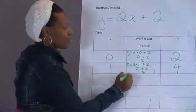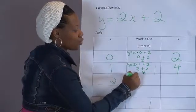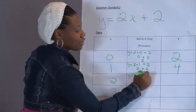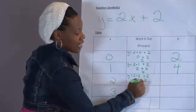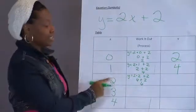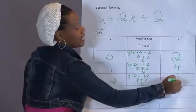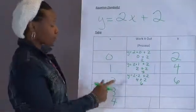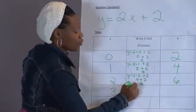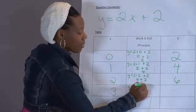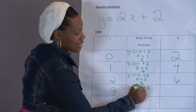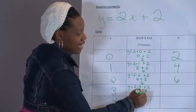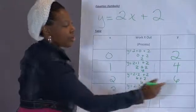Let's do the same for 2. Y equals 2 times 2 plus 2. 4 plus 2 is 6. So when x is 2, y is 6. Let's do the same thing for 3. Y equals 2 times 3 plus 2. 2 times 3 is 6. 6 plus 2 is 8. So when x is 3, y is 8.